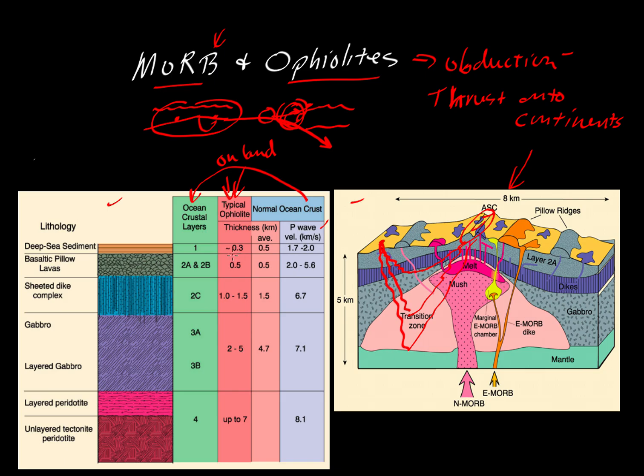For an ophiolite, this is what we might see on land. We might see a package of sediments, and then underneath those sediments might be a layer of pillow basalts. Underneath those might be a package of sheeted dikes, and then we might get gabbros and peridotites underneath that. So we get this entire package.